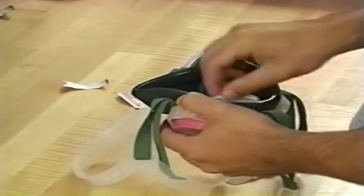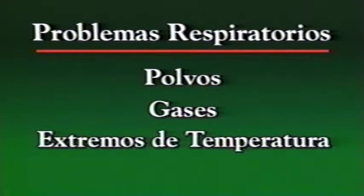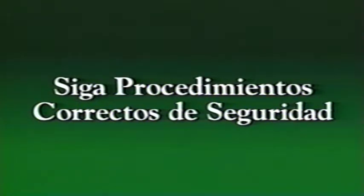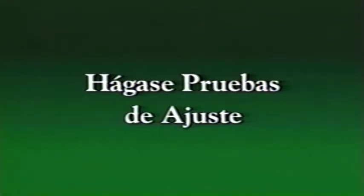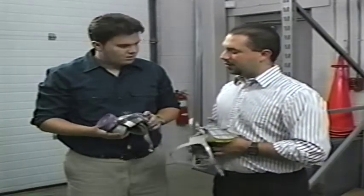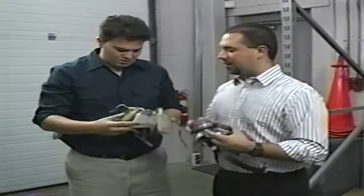Repasemos lo aprendido acerca de la protección respiratoria. Esté consciente de problemas respiratorios como polvo, gases y extremos de temperatura. Siga procedimientos correctos de seguridad, incluso las reglamentaciones de NIOSH sobre filtros. Lea las fichas de seguridad de materiales y esté alerta a peligros respiratorios. Use equipo de ventilación y controles ambientales para depurar el aire de contaminantes. Use las máscaras cuando sea necesario y asegúrese de usar el filtro apropiado para cada tarea. Hágase una prueba de ajuste, ya que la máscara es inútil si no le queda bien pegada a la cara. Mantenga bien su equipo, desinféctelo y guárdelo debidamente. Siempre use máscara en caso de peligro: el aire que respira es parte de su persona.